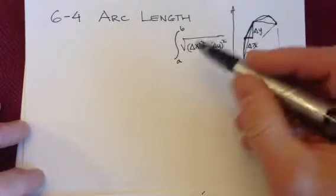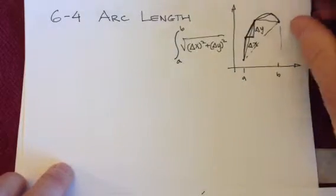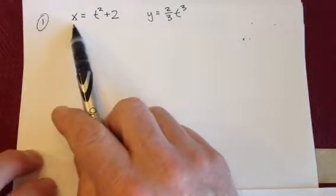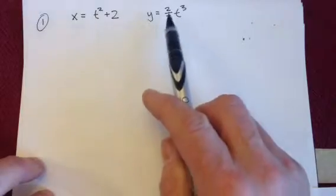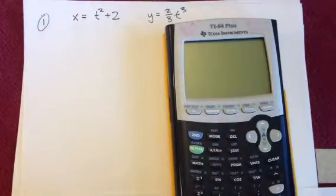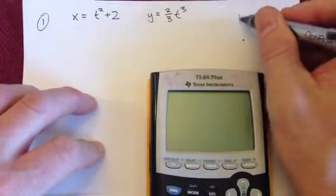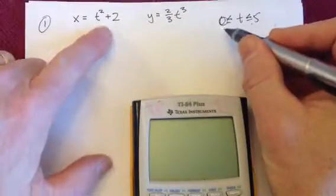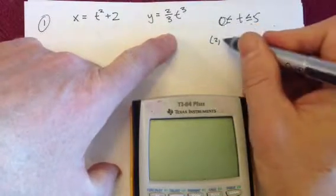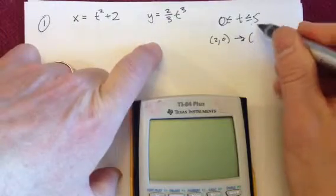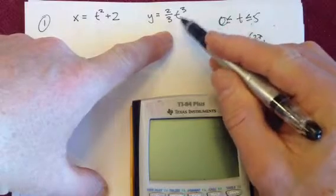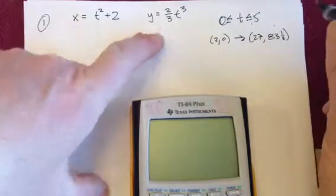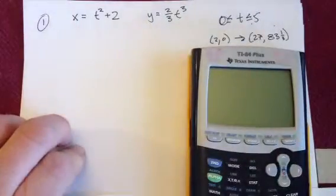Okay, so we can use arc length with parametric equations very simply and with regular functions. So I have an example for each one of these. First one is a parametric. So if we think that the x variable is being controlled by t squared plus 2 and the y variable is controlled by 2 thirds t cubed, I've put it into a calculator here so we can see the picture. And let's say this is going from t is from 0 to 5. When we plug in 0, we'll get the coordinates (2, 0), and when I plug in 5, that's going to be (27, 83 and a third).